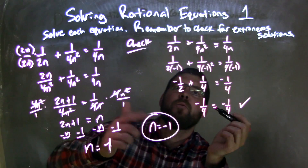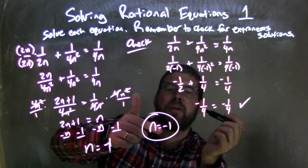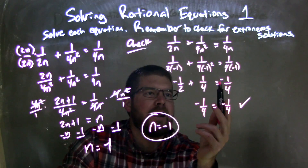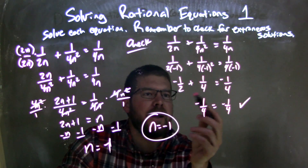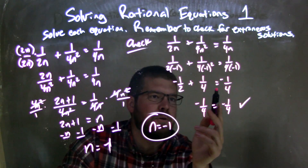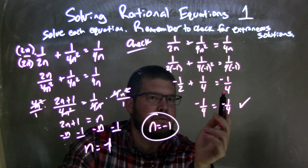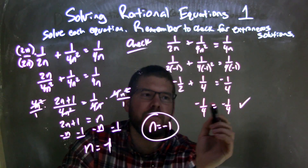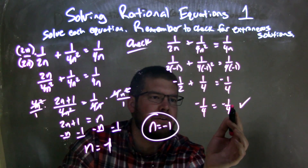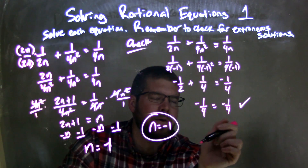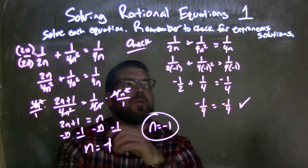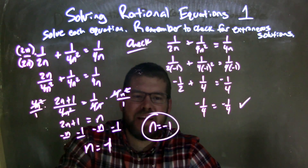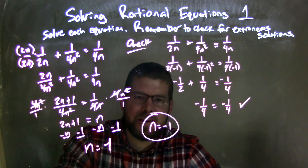I then plugged negative 1 back in for n, simplified, and ended up with negative 1 half plus 1 fourth equals negative 1 fourth. Well, negative 1 half plus 1 fourth is negative 1 fourth, and that equals the right-hand side of negative 1 fourth. So that's good — we don't have an extraneous solution, and our final answer is n equals negative 1.